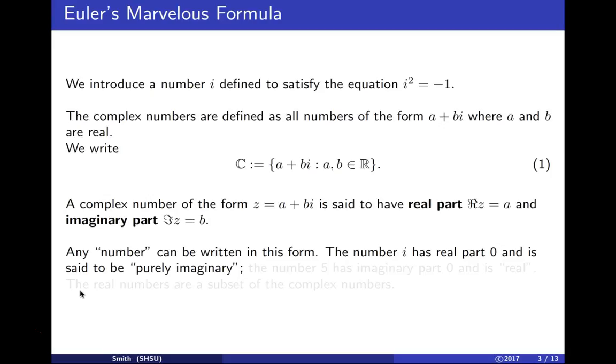The number i has real part zero and imaginary part one, and is purely imaginary. The number five has imaginary part zero but real part five. The real numbers are a subset of the complex numbers, specifically those where b equals zero.